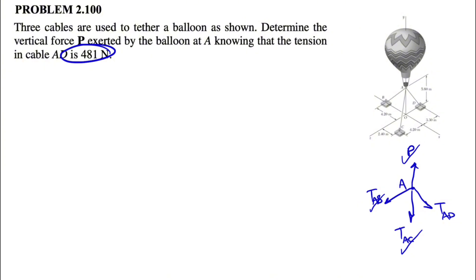Specifically we need to find force P, so we need each of these forces in vector form. Let's start with P, which is the simplest one. As we can see, P acts along the positive y-axis, so it would simply be P times j. Now we do the same for the three cable tensions. Let's start with T_AB.